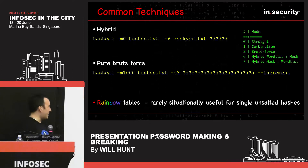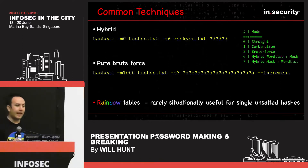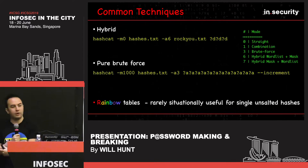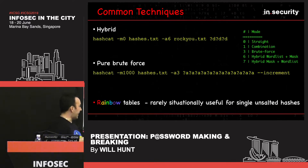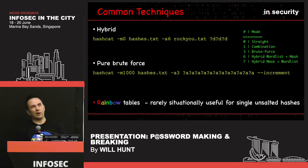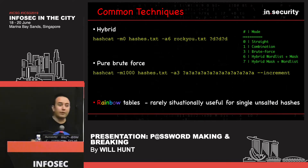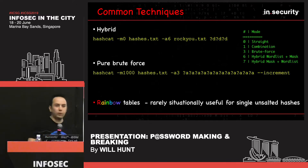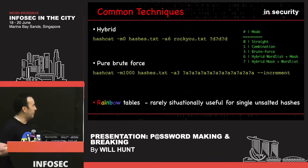Rainbow tables are a list of pre-computed hashes with their clear text, saving the step of hashing a candidate before comparing to a stolen hash. The problem is they have a huge storage requirement. You can find sites offering free LM, NTLM, MySQL, and SHA variant tables, but they only go to about nine or ten characters and even then we're talking terabytes of storage. The second you have a password longer than ten characters, you're not going to crack it with rainbow tables. They're quicker but typically not used in the field these days.